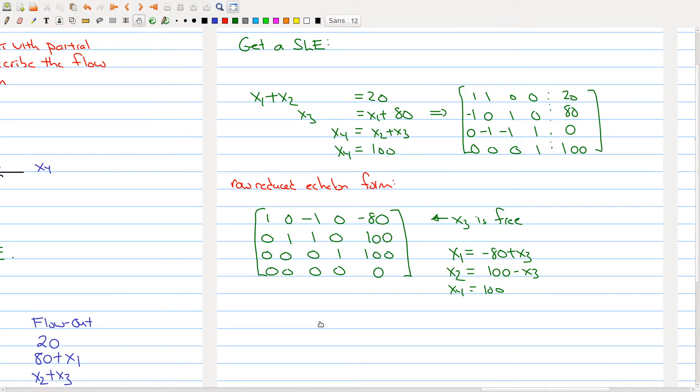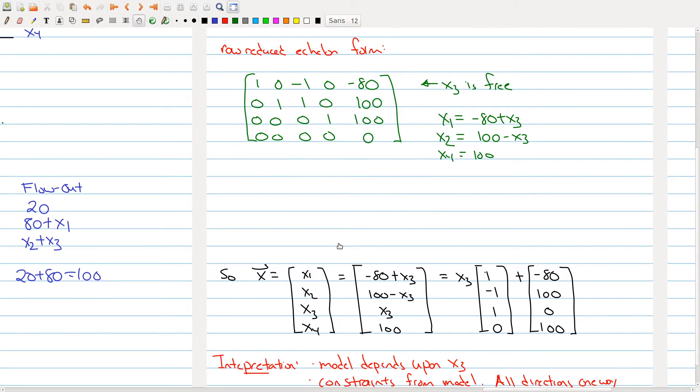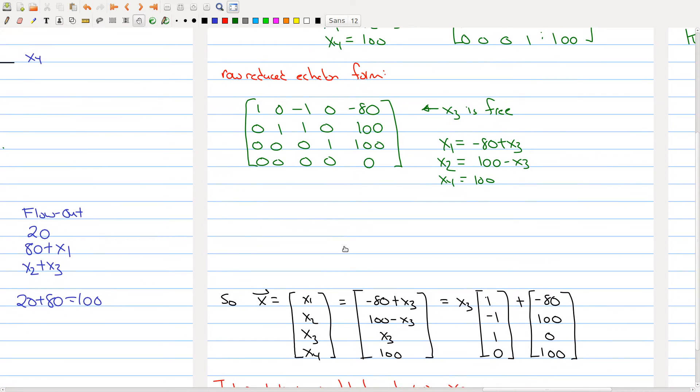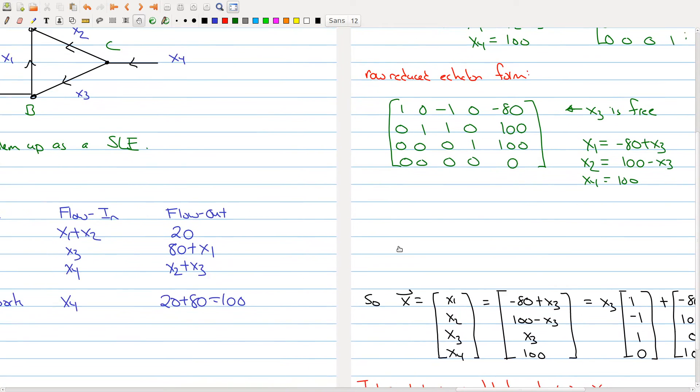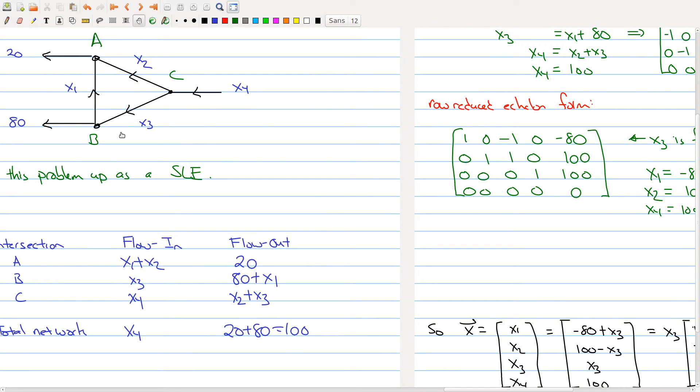At the bottom here I've written what a general solution should look like. A general solution x1 through x4 will be a solution to this network flow if x1 is negative 80 plus x3, x2 is 100 minus x3, x3 is my free variable, and x4 equals 100. I can rewrite it in this parametric form: whatever the value of x3 is, I can multiply it by this vector and then add this vector, and I would get a description of this network.